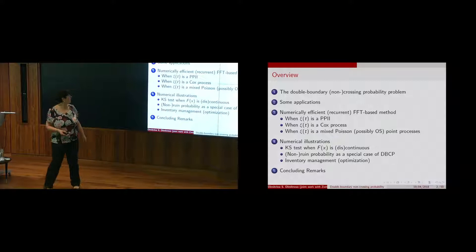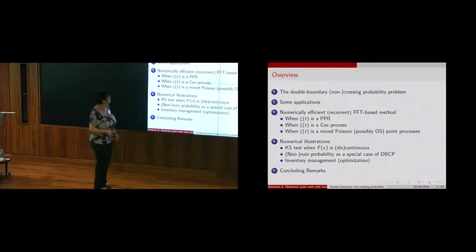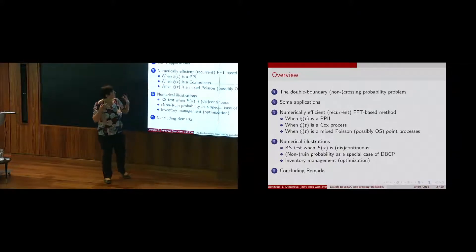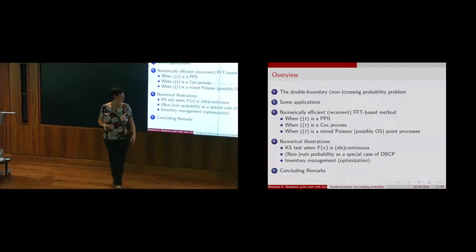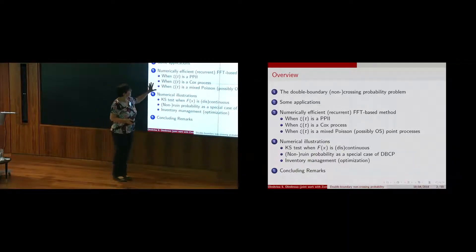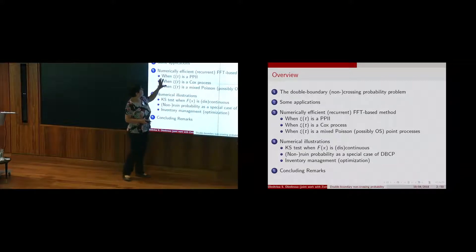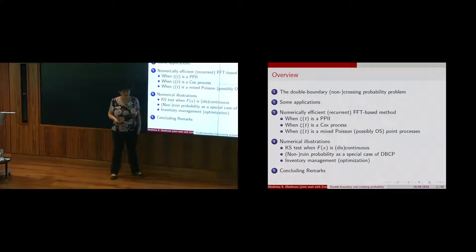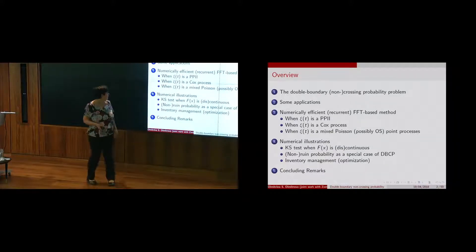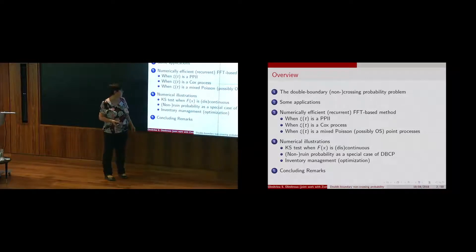An overview of the talk: I'll start by introducing the double boundary crossing probability problem, then indicate some applications which we'll keep in mind when we introduce the assumptions behind the model. Then I'll describe the method to efficiently compute that probability and explain why we are interested in a numerically efficient method rather than explicit formulae. Finally, we'll look at some numerical illustrations in three different contexts.